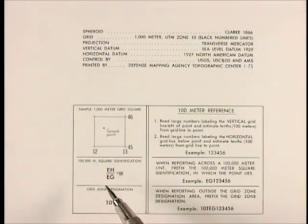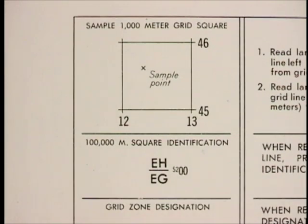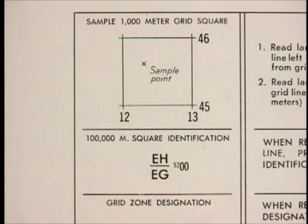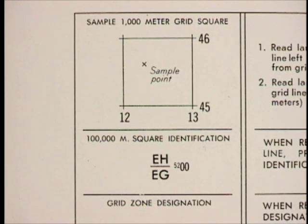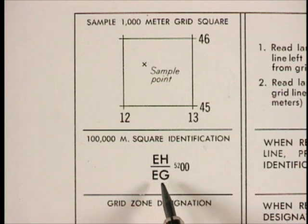Most maps are going to have a single 100,000 meter grid zone designation. A few, and this is a good example of it, have two, because the map sheets don't correspond directly to grid squares or zones. So this one at the 52,000 line, 52,001, divides between EH and EG. There's no particular note on the map about this, you just need to know it exists. And make sure that when you're referring to things where people don't know that you're working on the same map sheet, that you use the correct 100,000 meter grid square identification.